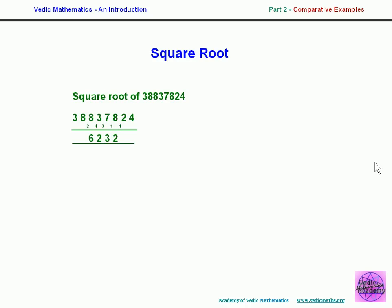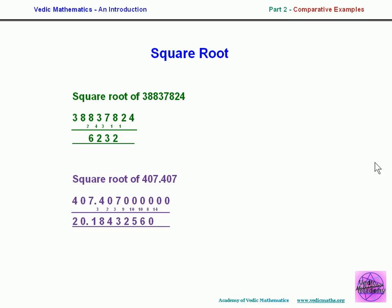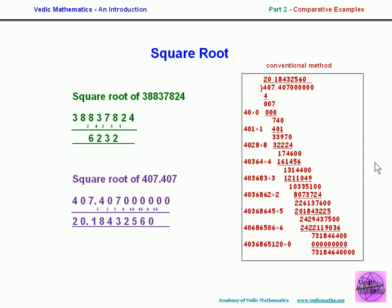For square roots, we get the answer in one line by the Vedic method. For example, the square root of 407.407 gives a one-line answer with just a few carry figures. The conventional method is so difficult it's not even taught nowadays. With a slight variation, we can also handle quadratic equations, since finding the square root of a number is equivalent to solving x squared equals that number — and more complex quadratic equations can be handled too.